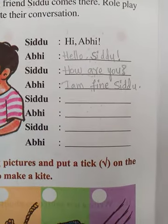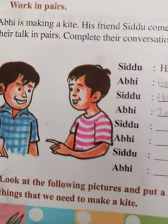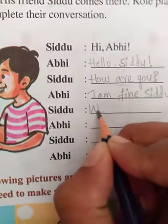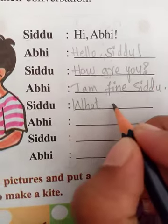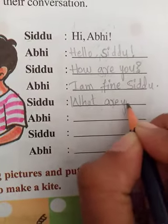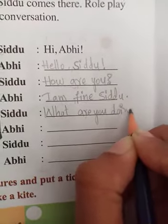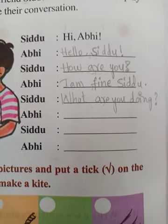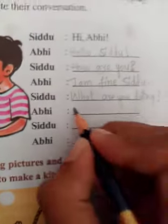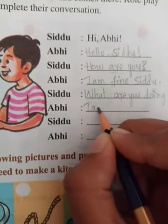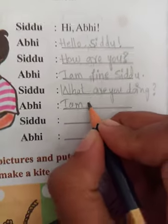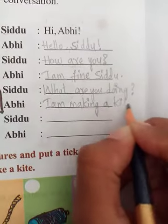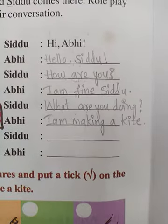Now Sidhu asks about what Abhi is doing. He asks 'What are you doing?' — with a question mark at the end. Abhi answers: 'I am making a kite.'